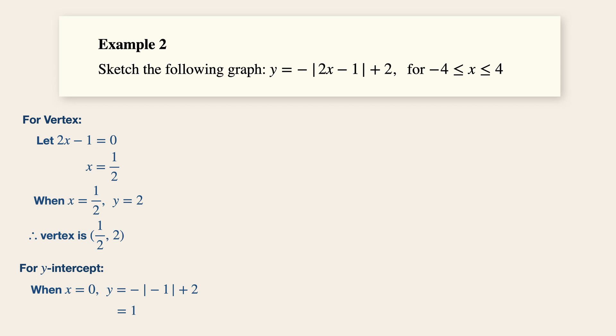Now in the third step, remember, it is about the domain, how far left or right is the graph going to extend. Now for this particular domain, when x is equals to minus four, y is equals to minus minus minus eight minus one plus two. And this gives us a value of minus seven. When x is equals to four, y is equal to minus eight minus one modulus plus two. And this gives us a value of minus five.